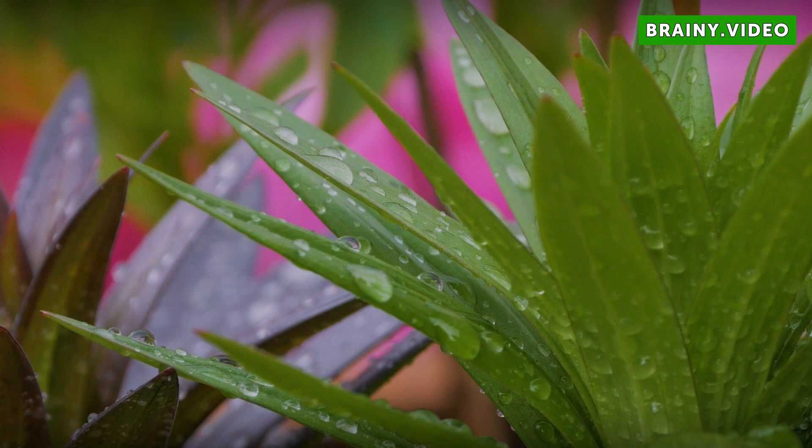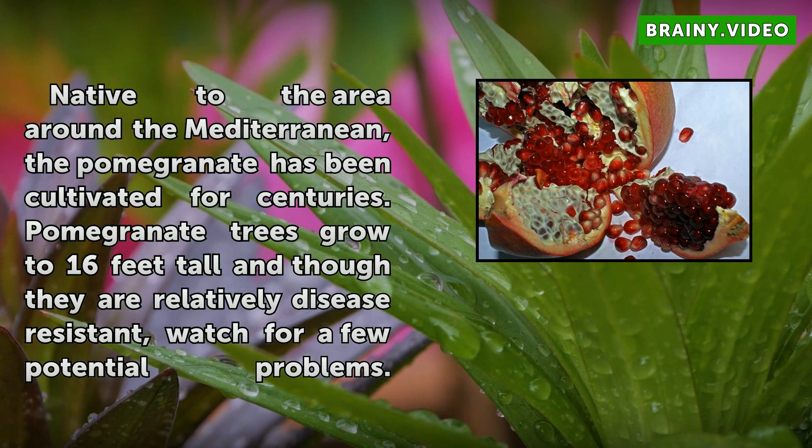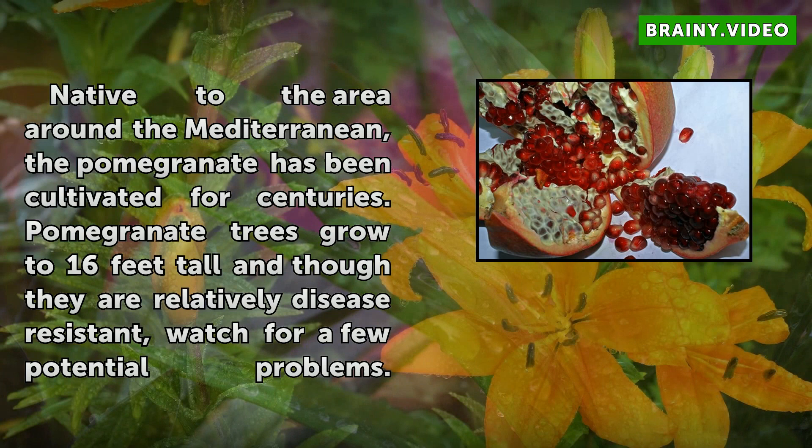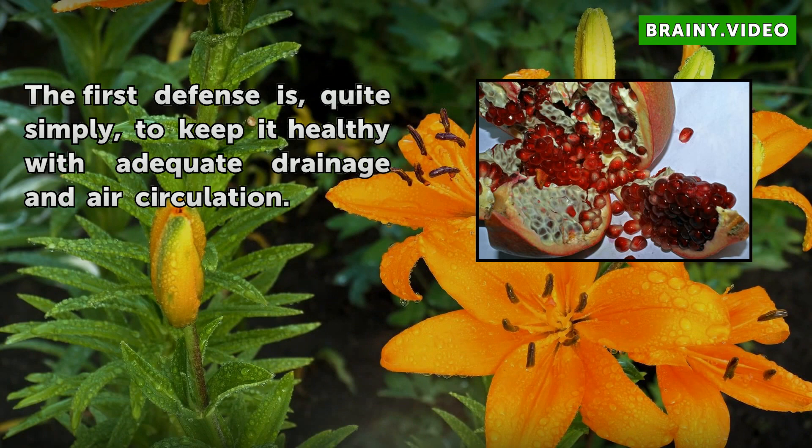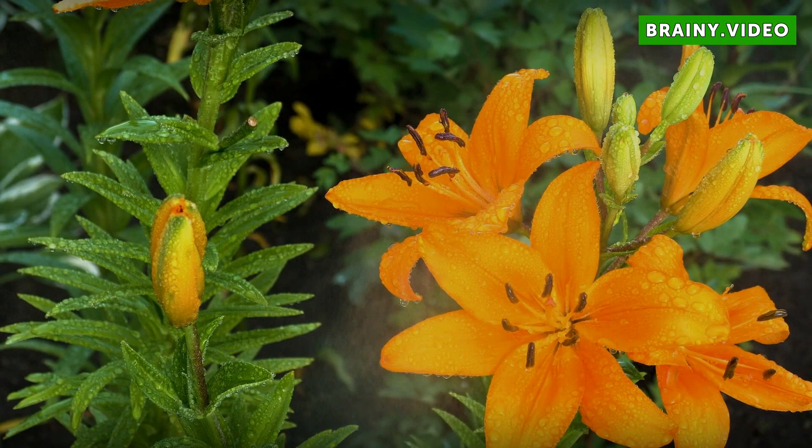Pomegranate tree problems. Native to the area around the Mediterranean, the pomegranate has been cultivated for centuries. Pomegranate trees grow to 16 feet tall and though they are relatively disease resistant, watch for a few potential problems. The first offense is quite simply to keep it healthy with adequate drainage and air circulation.